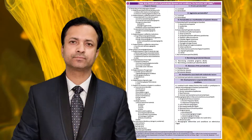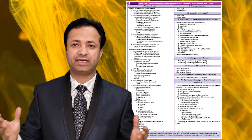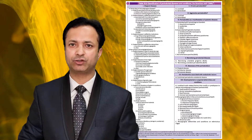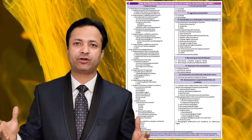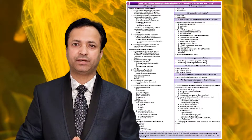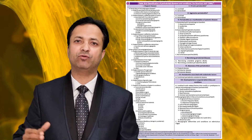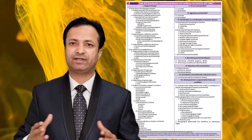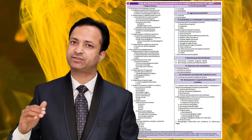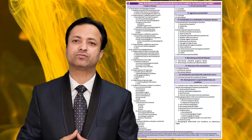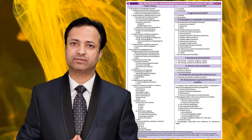Another change was the replacement of adult periodontitis with chronic periodontitis. In the 1989 system, adult periodontitis included patients aged 35 or more with slow disease progression and breakdown consistent with local factors. Since this disease may also occur in patients under 35, the age bar was removed. Both aggressive and chronic periodontitis were divided into three severity classes: slight (clinical attachment loss 1–2 mm), moderate (3–4 mm), and severe (5 mm or more).